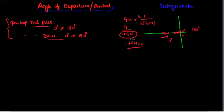For real poles and real zeros we have no complication — we know the angle of departure or arrival from the angle criterion, and we can identify which section of the real axis exists as root locus. The complication arises when we have complex conjugate poles or complex zeros.